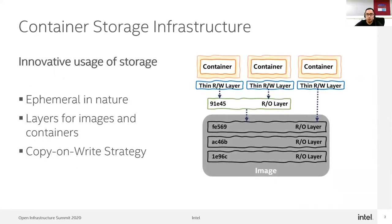What makes containers the most valuable and popular technology? One of the factors, I think, is the innovative storage usage. Containers are ephemeral in nature. They have a file system of their own. When a container dies, the data stored locally in their file system is also gone. Images and containers are built up from a series of layers. When you create a new container, you add a new writable layer on top of the underlying layers. All drivers use stackable image layers and the copy-on-write strategy, meaning any modifications are made to a copy of the file and the container cannot see the read-only copy of the file that exists in the lower layer.